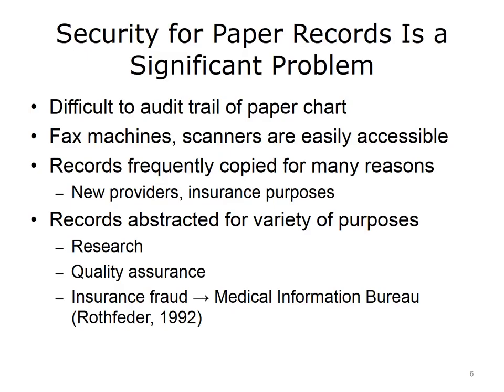Unlike electronic records, it is very difficult to audit the trail of a paper chart. Even with paper-based tracking documents, it is not clear exactly where the chart goes and who has looked at it. Electronic information systems are able to provide a detailed audit trail as a background process that identifies everyone who logs into the software application and tracks their specific system activities with a date and time stamp. There are also issues with fax machines and scanners. Even in this electronic era, many people still rely on fax machines and scanners to move information. When the document comes out of fax machines, anyone can view the paper, and it is difficult to track where the paper goes. Also, data stored in fax machines and scanners can easily be accessed.